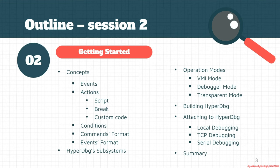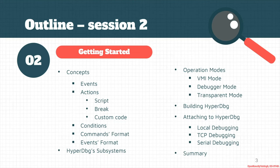In this session, we're going to learn about basic HyperDbg concepts like events, actions, and different actions that are a script, break, or custom code. We're going to talk about conditions, different command formats in HyperDbg, and events format. We also see different subsystems of this debugger and we're going to learn about operation modes in HyperDbg like VMI mode, debugger mode, and transparent mode. At last, we start building HyperDbg and we attach to it in a local debugging area or in TCP or serial debugging.